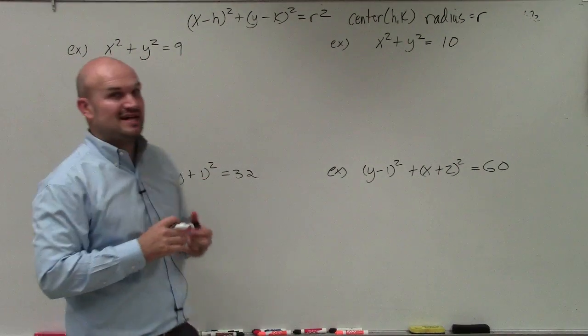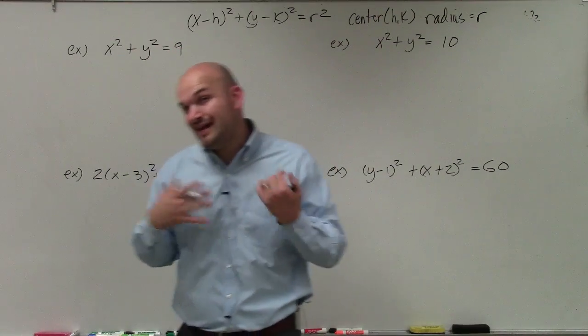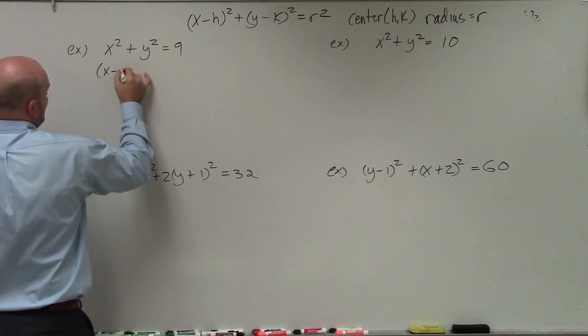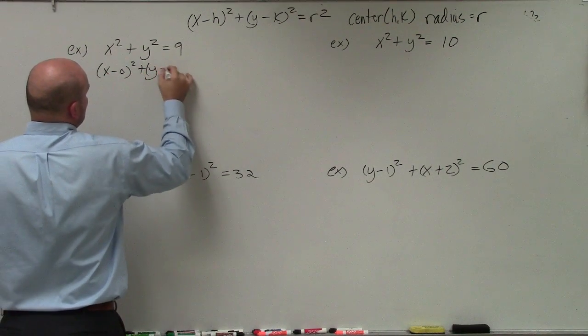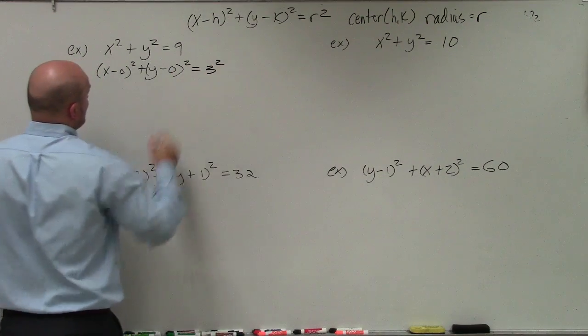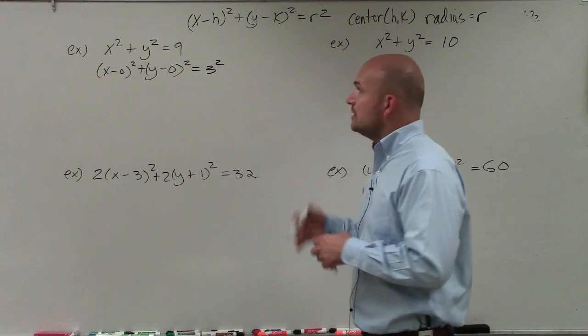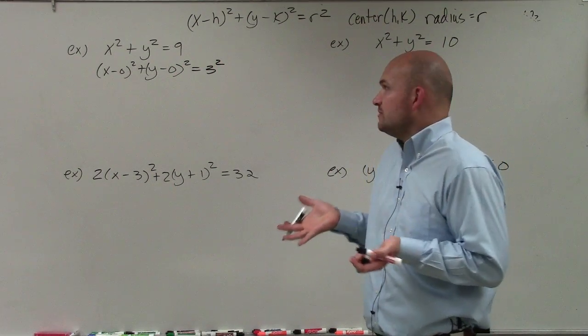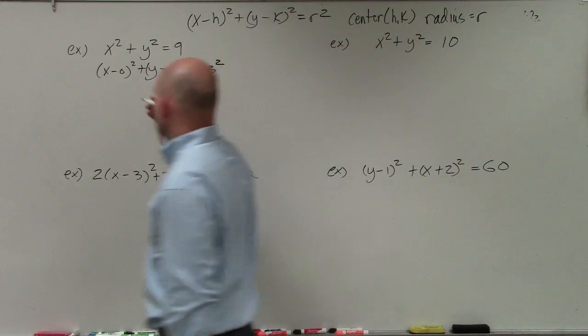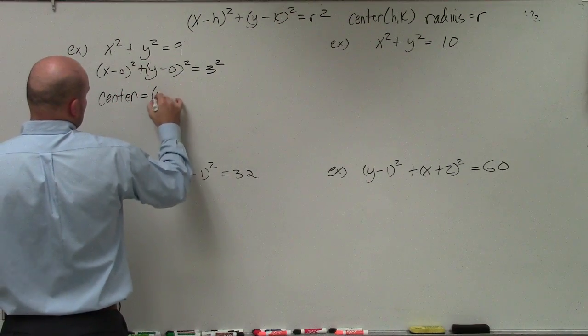In this case, I have x squared plus y squared equals 9. You can see there's no h or k, nothing subtracting from them. In reality, they are there but represented as zeros. So you can see this is going to be x minus 0 plus y minus 0. What's x minus 0 is just x, and that's x squared. Therefore, the center is equal to 0 comma 0.